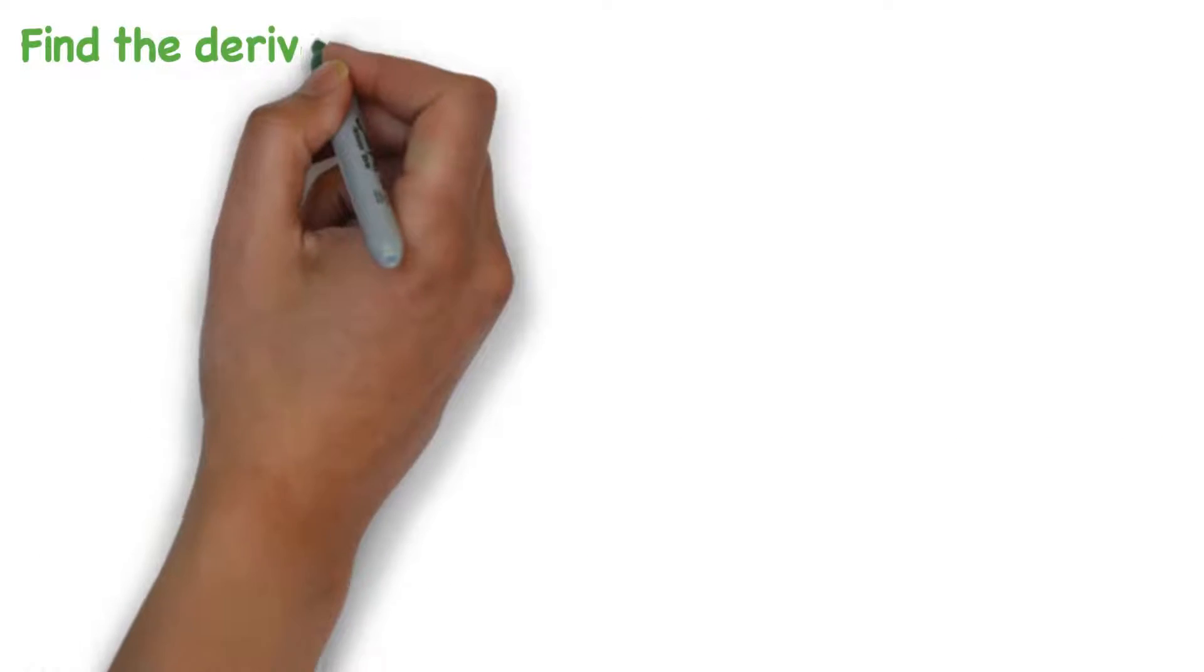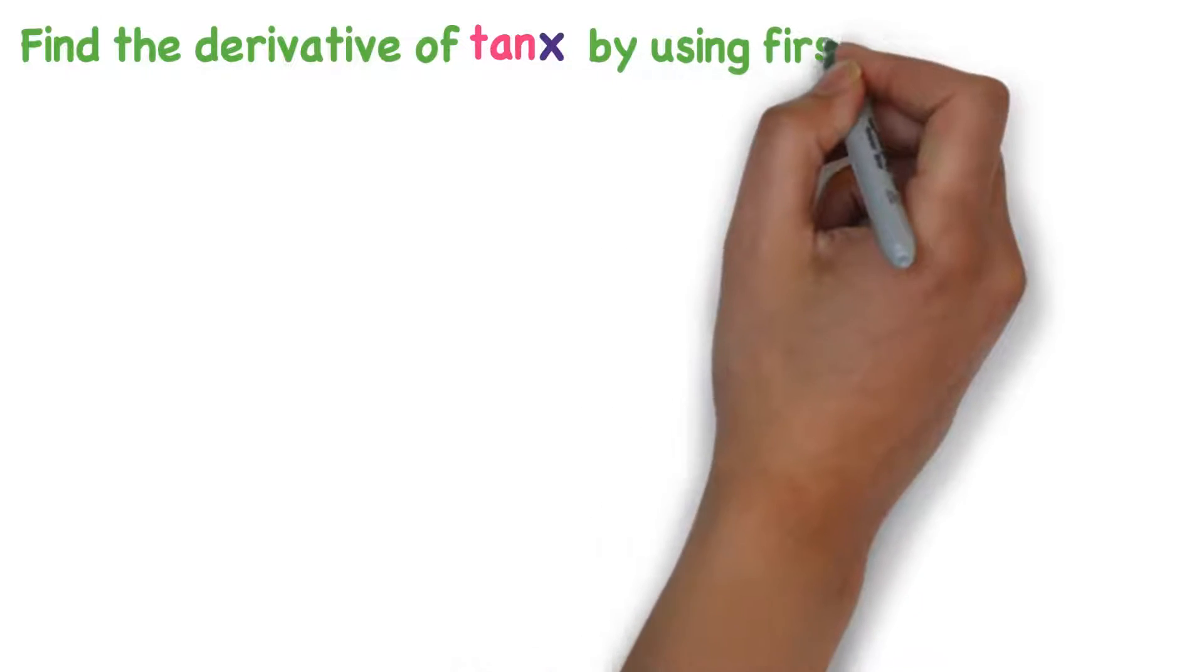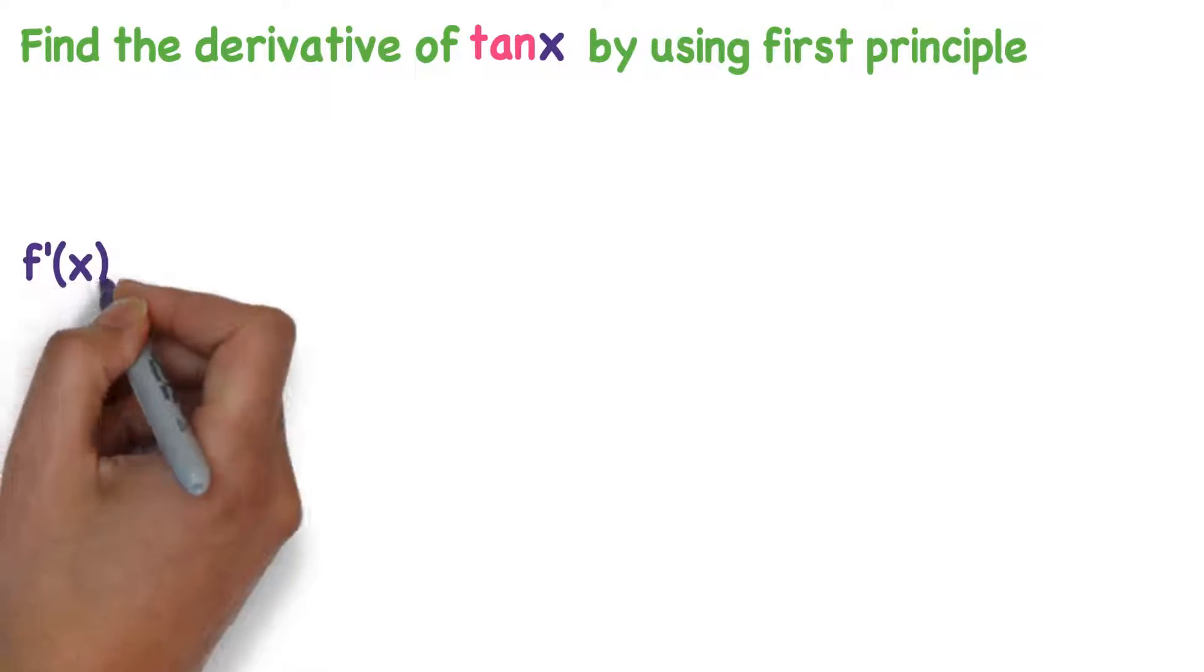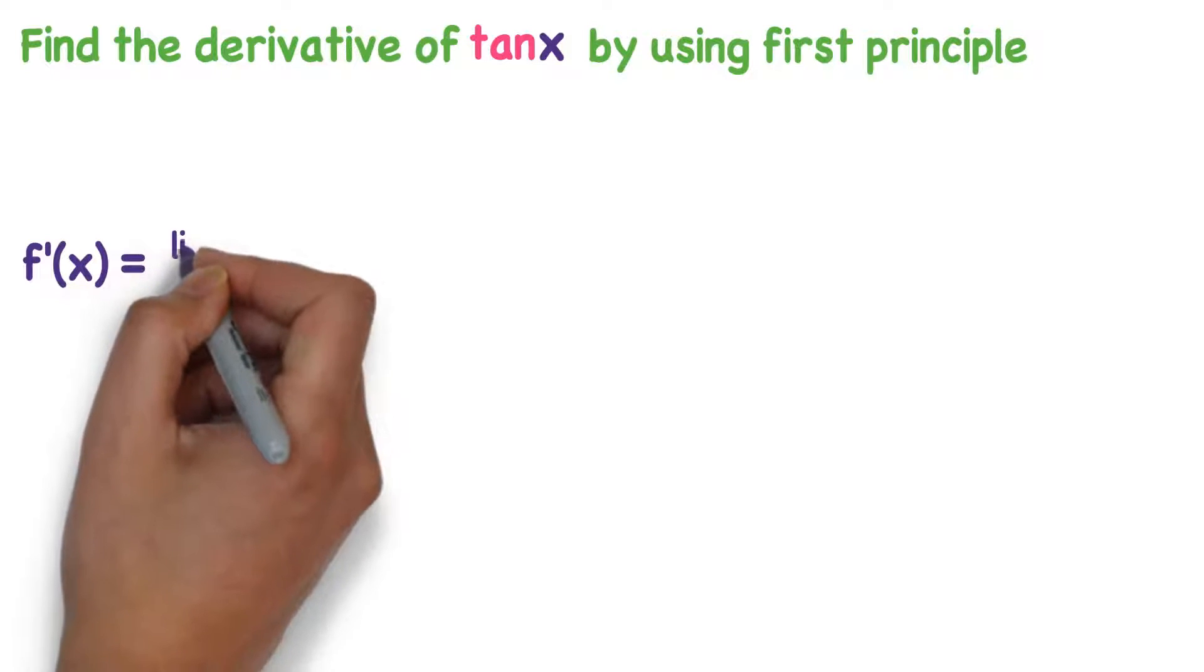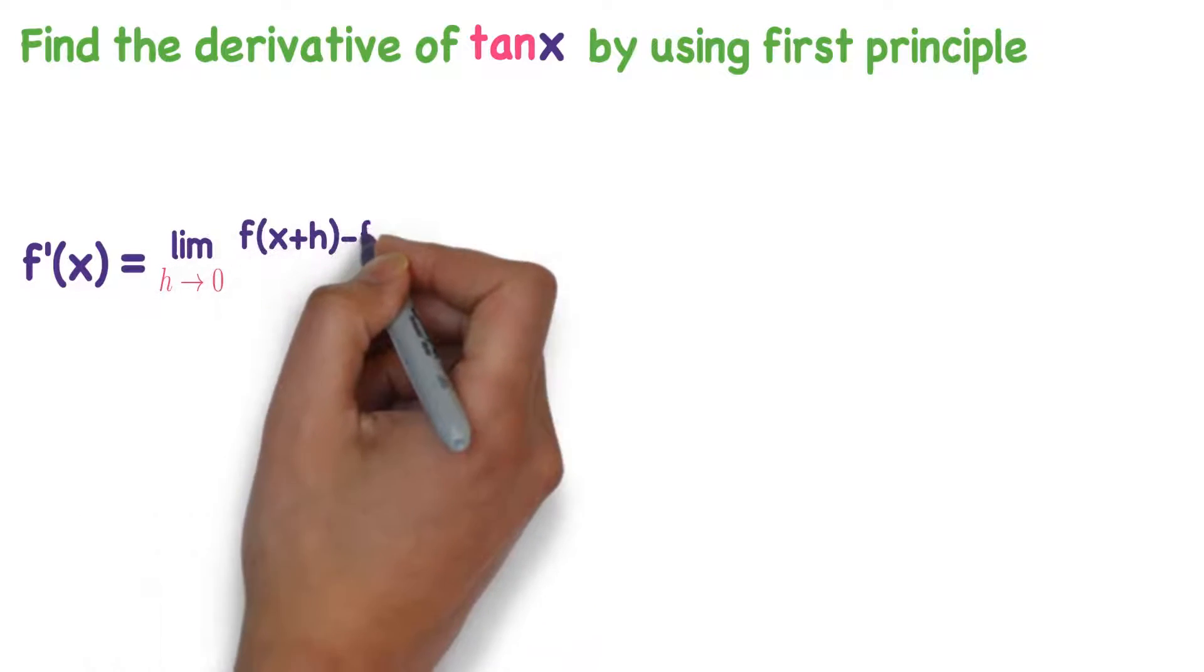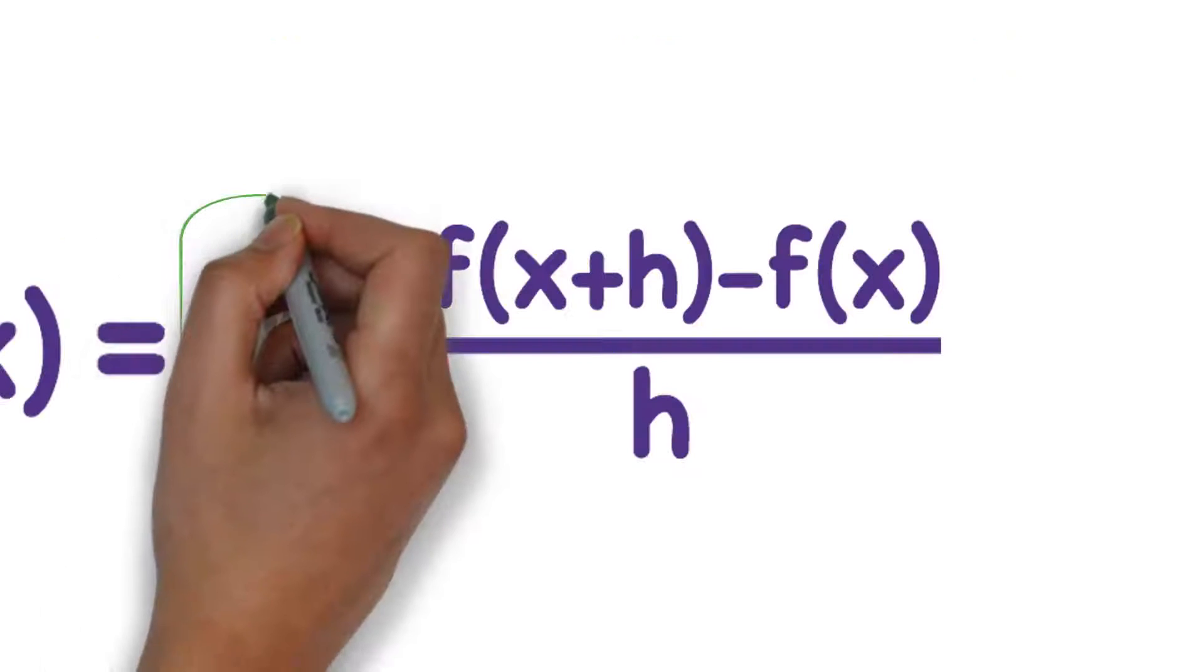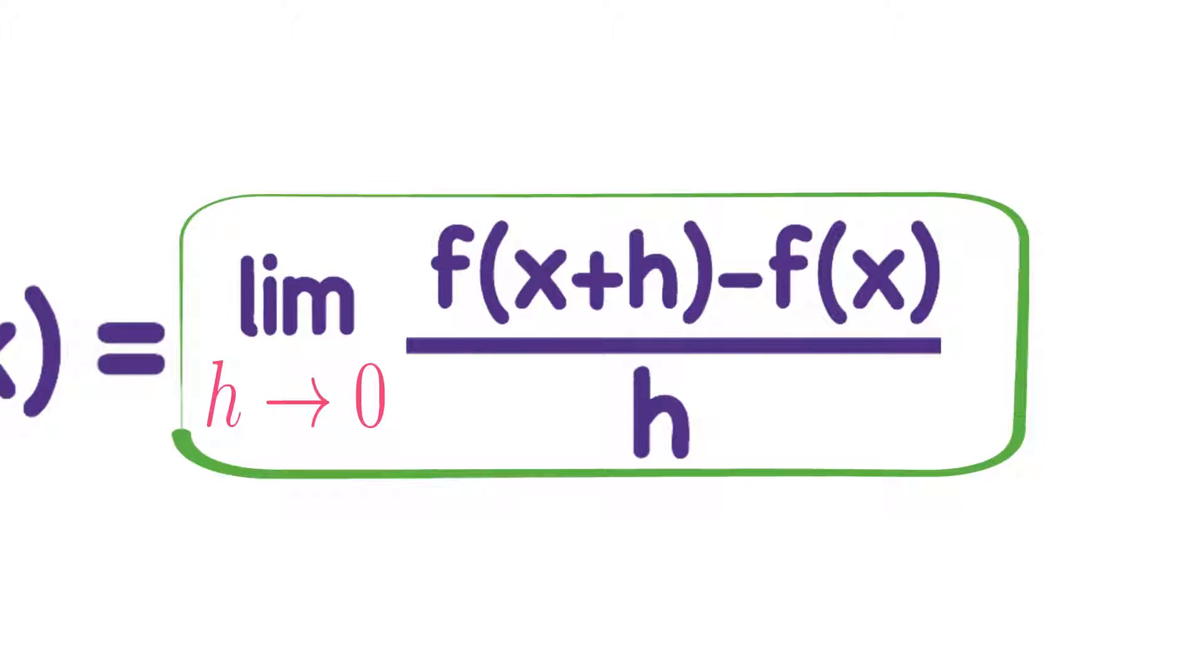Find the derivative of tan x by using first principle. We know first principle of derivative. Derivative of f(x) is denoted by f'(x). Limit h tends to 0, f(x+h) minus f(x) divided by h. This expression is called first principle of derivative.